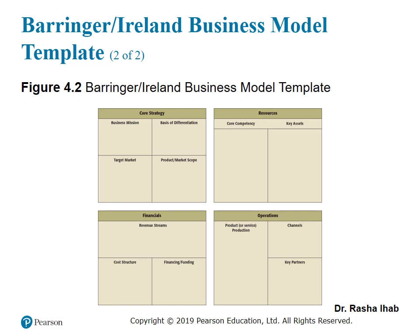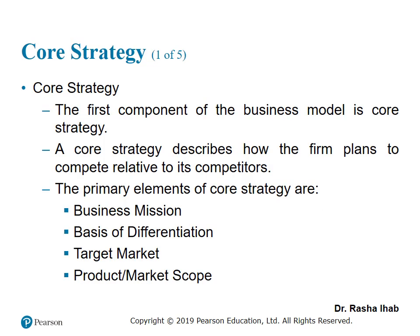Let's take each block and describe it in detail. The first one is the core strategy. Core strategy is the first component of the business model. It describes how the firm plans to compete relative to other competitors in the market who produce or provide the same product or service. This part is divided into four parts: the business mission, the basis of differentiation, your target market, and finally, product or market scope.